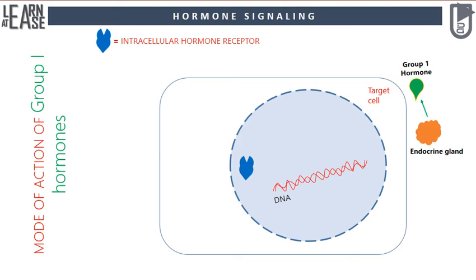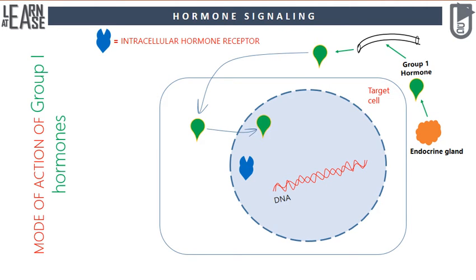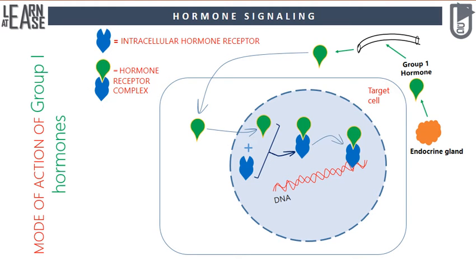Away from this target cell, an endocrine gland produces a Group 1 hormone. This hormone enters the bloodstream and spreads across the body. From the bloodstream the hormone enters the target cell. Because the hormone is lipophilic, it easily enters the cell through the cell membrane and then enters the nucleus through the nuclear pore.